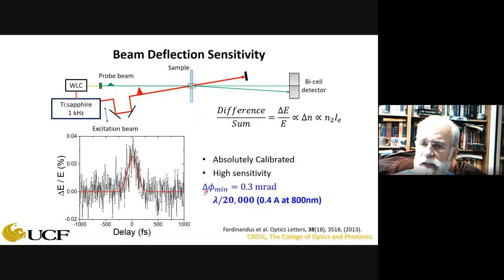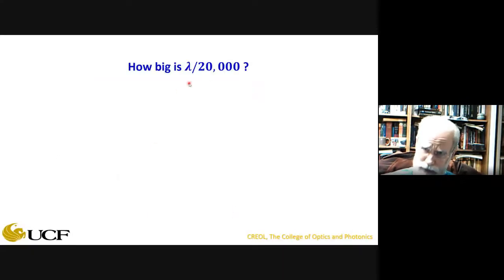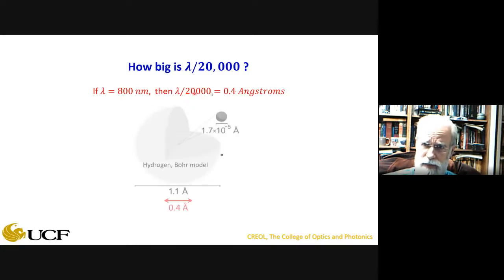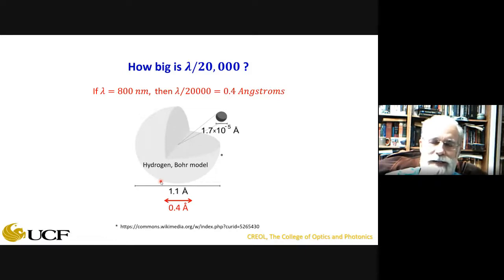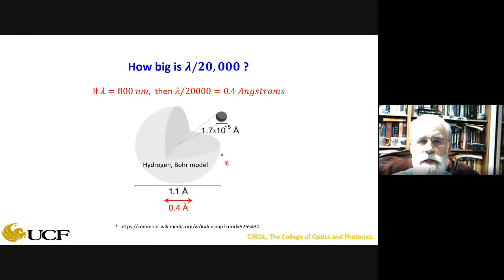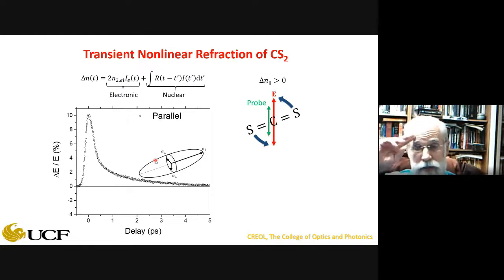This extraordinary sensitivity — better than λ/10 to λ/20 commercial optics quality — arises from modulating the excitation beam on and off and using lock-in amplifiers to detect only the probe change caused by the excitation. Carbon disulfide (CS₂) is a linear molecule (C with two sulfur atoms) with no permanent dipole moment, but a strong electric field aligns it. Parallel polarization shows both a bound electronic response and slow molecular reorientation decaying due to thermal motion.